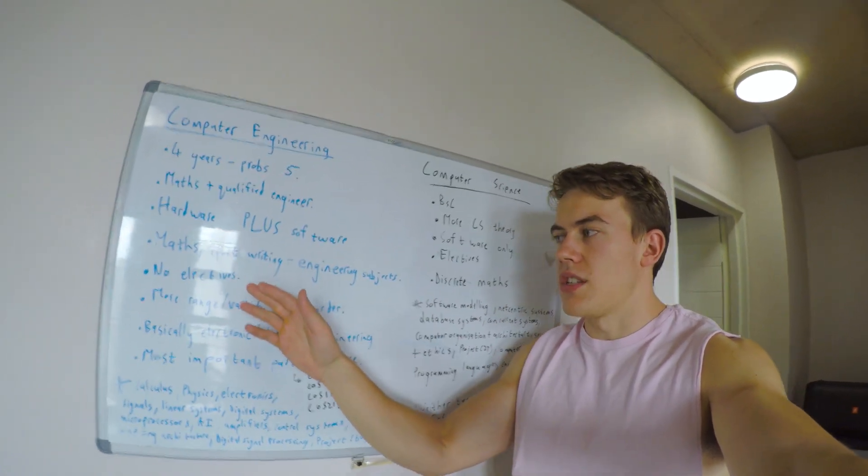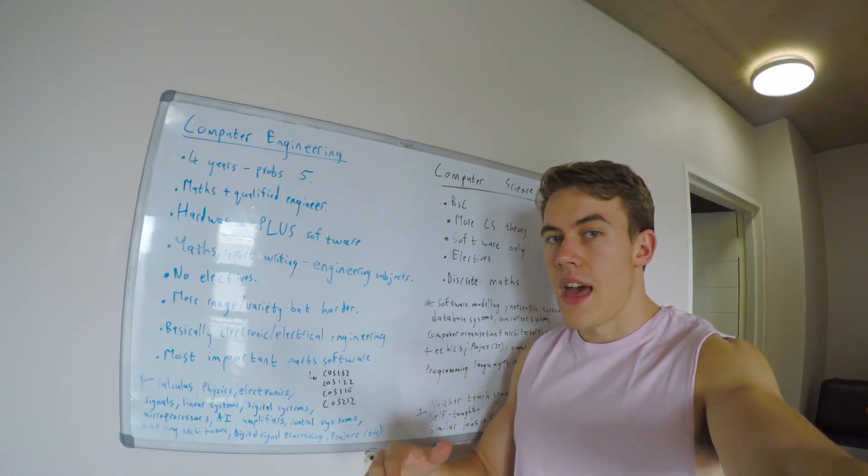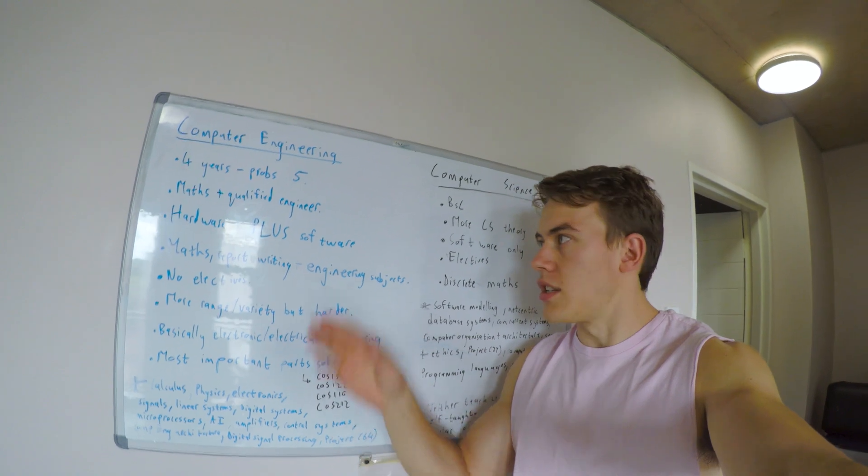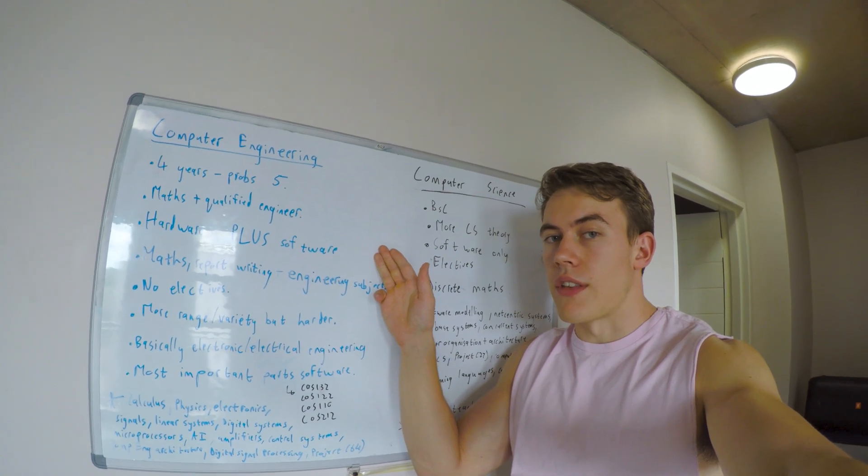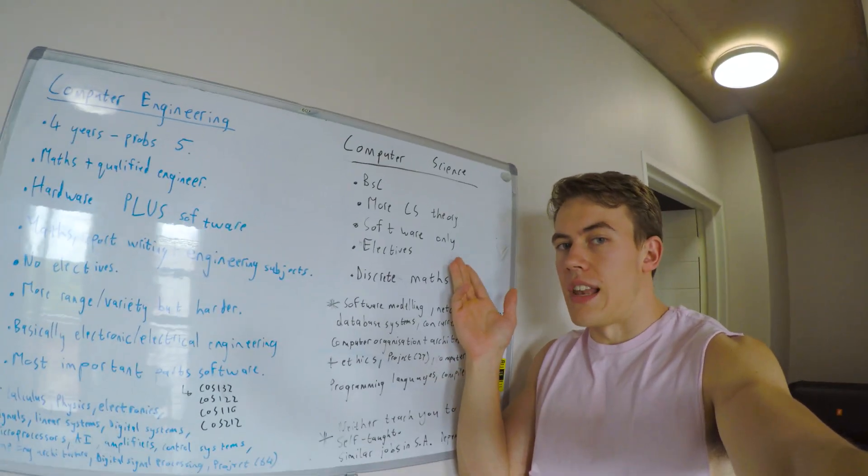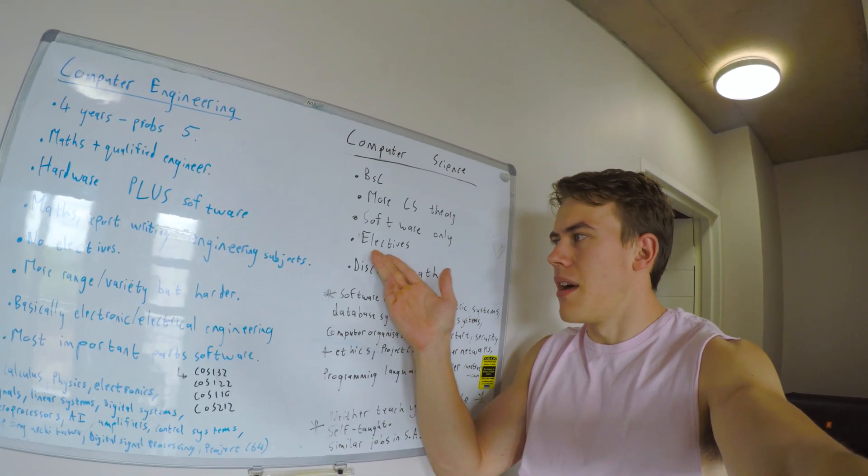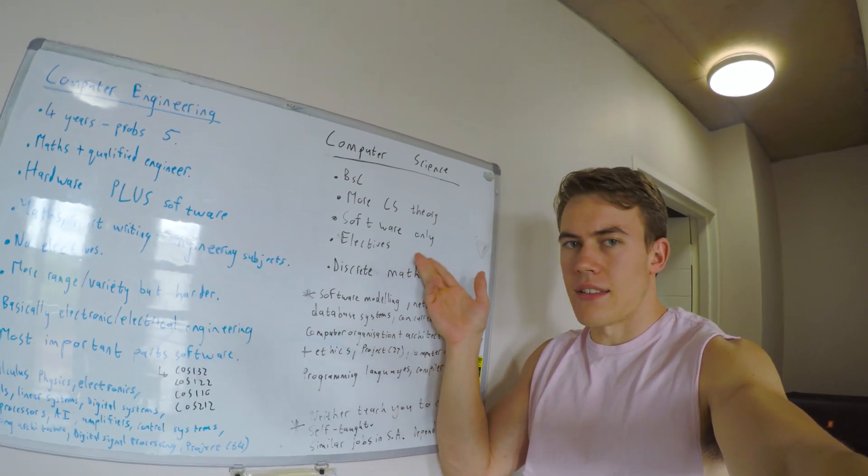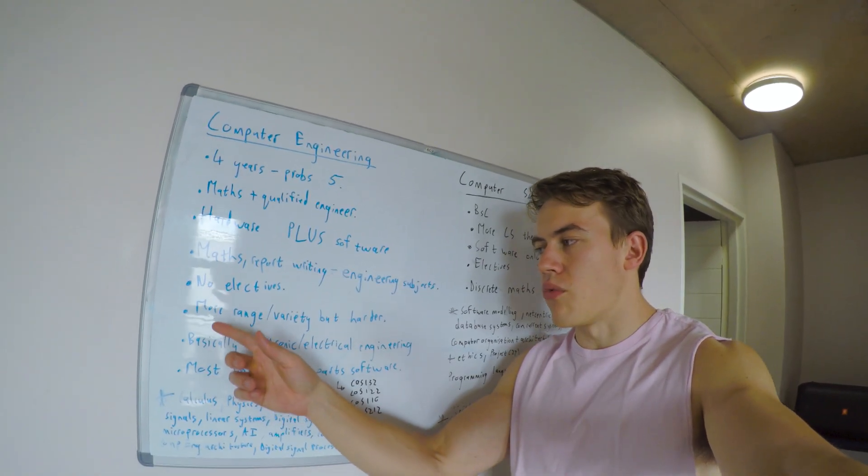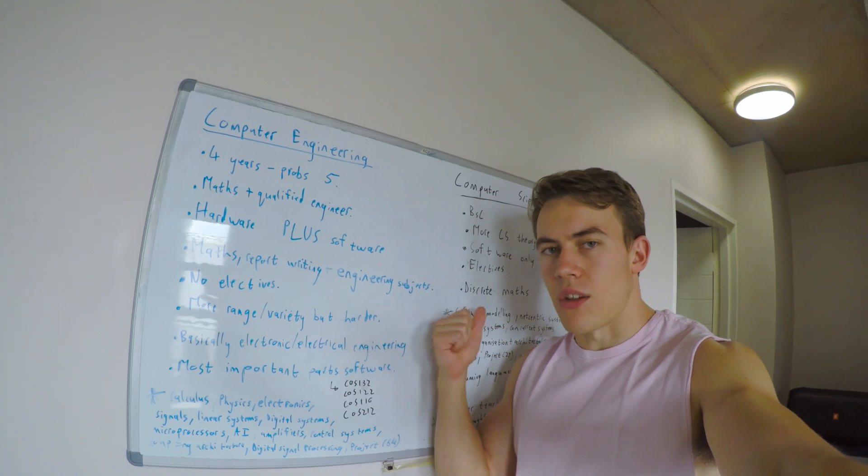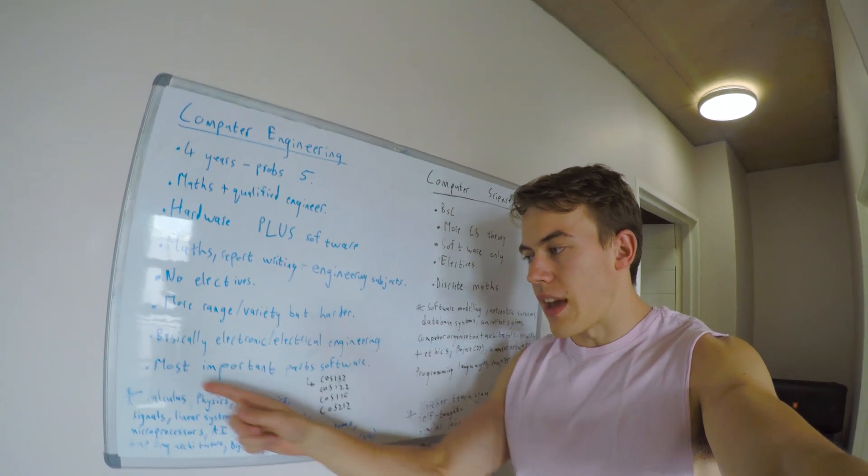Something to be aware of: computer engineering, at Tux at least, doesn't have any electives, so you don't choose which subjects you're doing. There's a set degree plan which I'll put in the description. Computer science, you have some choice in the electives that you take. You can take some humanities modules, like English or geography, and you can also do AI stuff if you're interested in that. My personal opinion is that computer engineering has a lot more range and variety than computer science, but of course it's a lot harder because you're doing all of those engineering subjects.